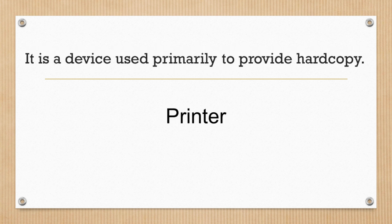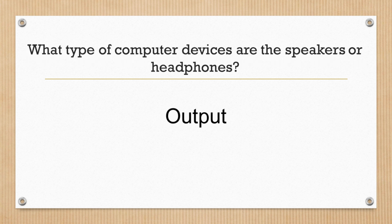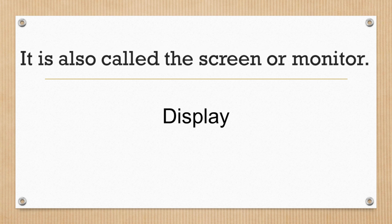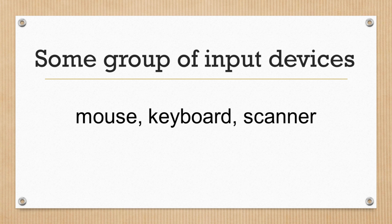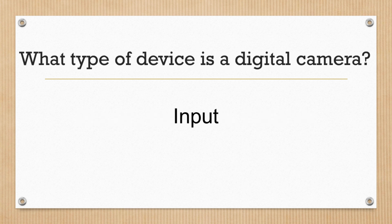It is a device used primarily to provide hard copy. Printer. What type of computer devices are speakers or headphones? Output. It is also called the screen or monitor. Display. Some examples of input devices: mouse, keyboard, scanner. What type of device is a digital camera? Input.